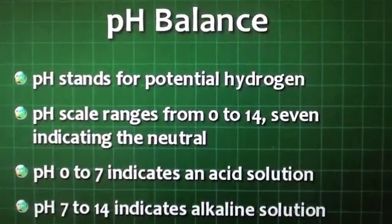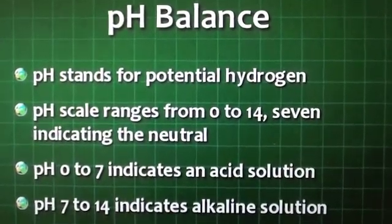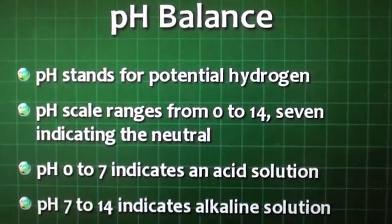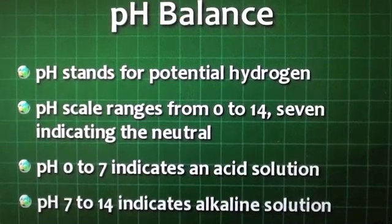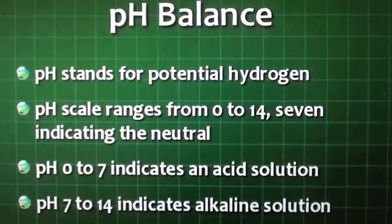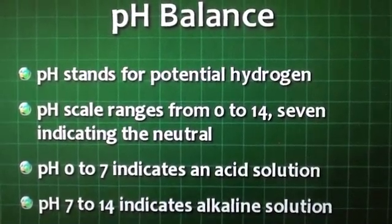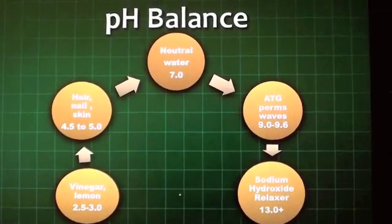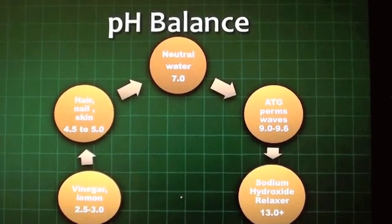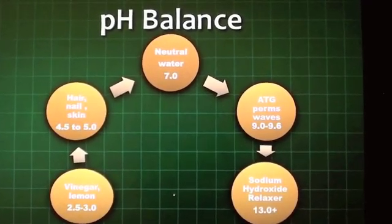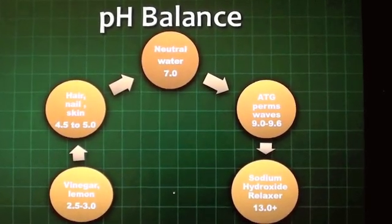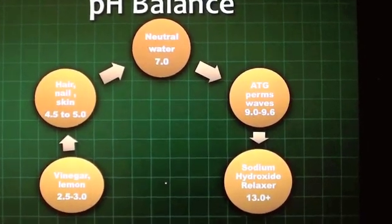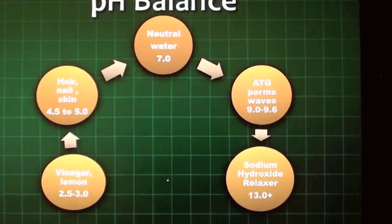pH stands for potential hydrogen. The pH scale ranges from 0 to 14, with 7 indicating neutral. pH 0 to 7 indicates an acid solution; pH 7 to 14 indicates an alkaline solution. On the pH scale, acids are on the left and alkalines are on the right. Water is neutral at 7.0. Hair, nail, and skin are 4.5 to 5.0.